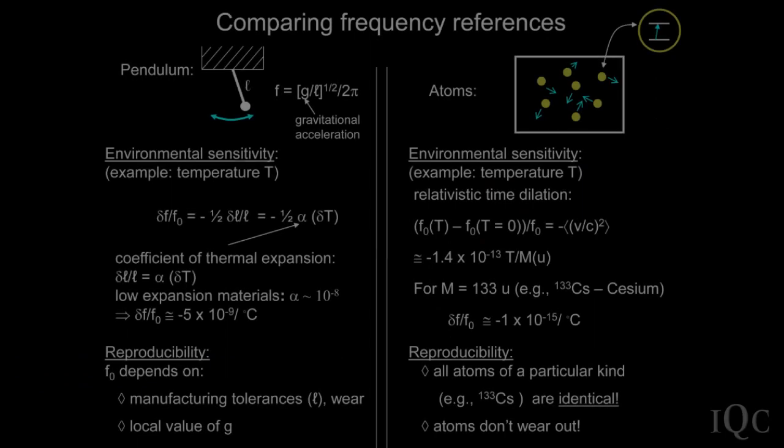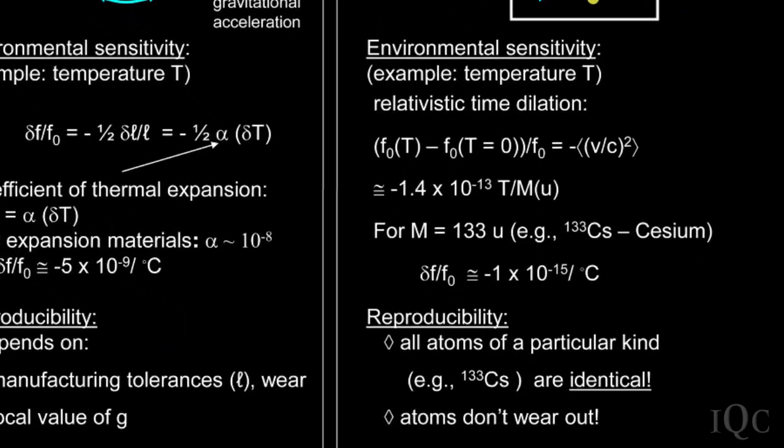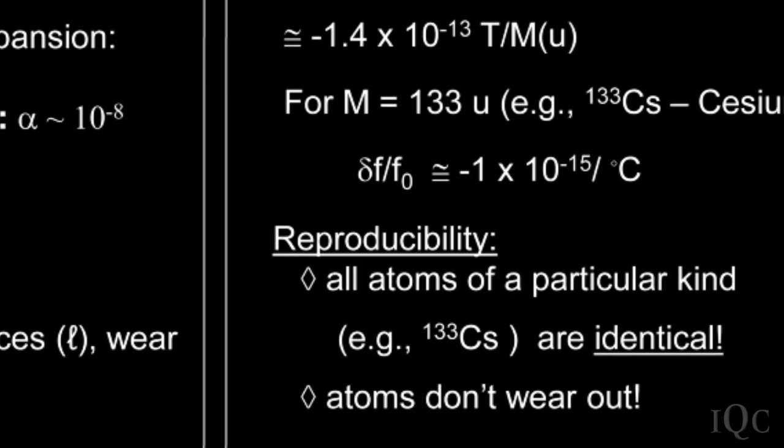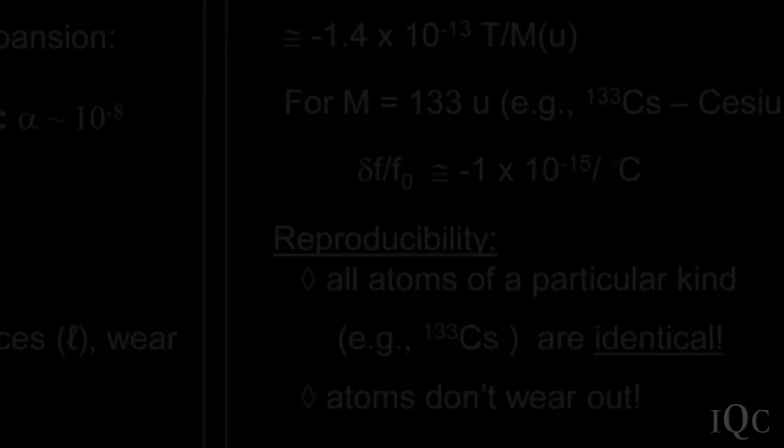One of the nice things about atoms as opposed to pendulum clocks is that, as far as we know, all atoms of a given type are exactly identical. So as opposed to a pendulum clock, as good as we might be able to make the length of the pendulum be the same on different clocks, we can never do that precisely. So there's errors in one clock versus another.